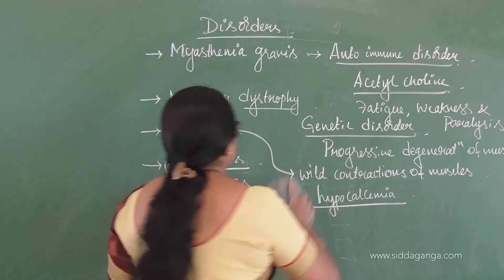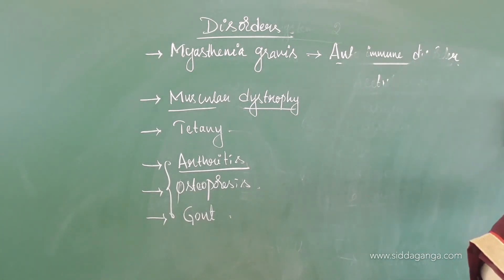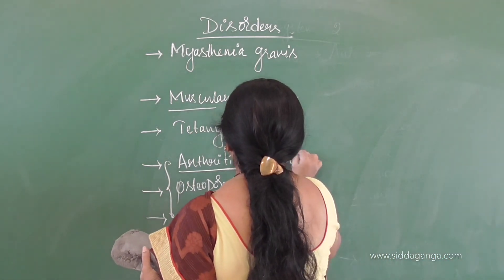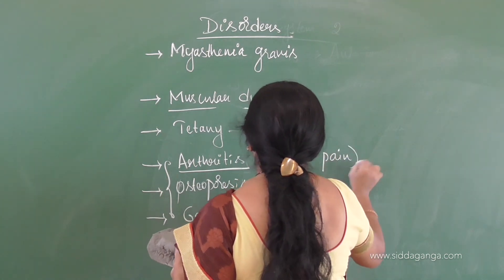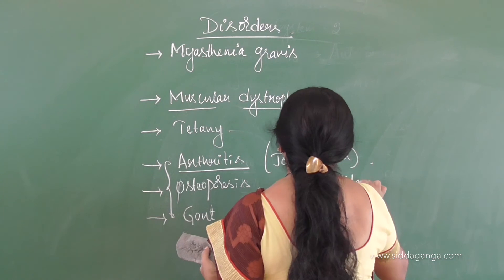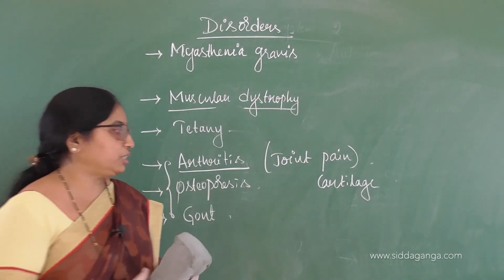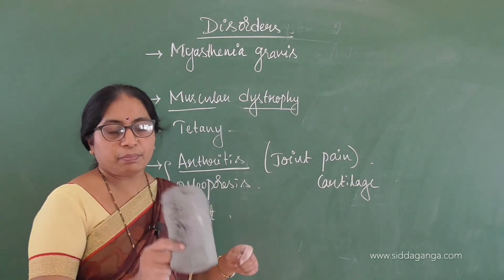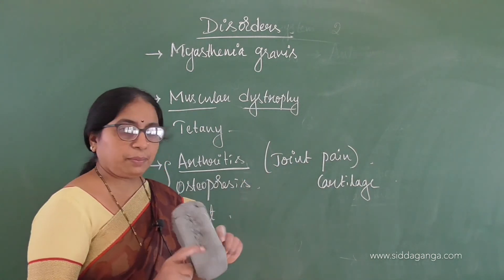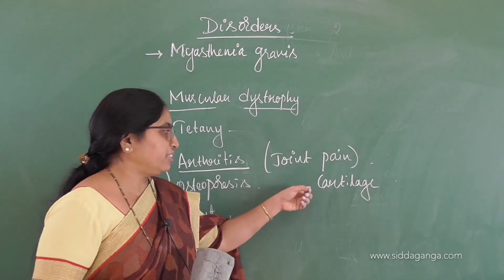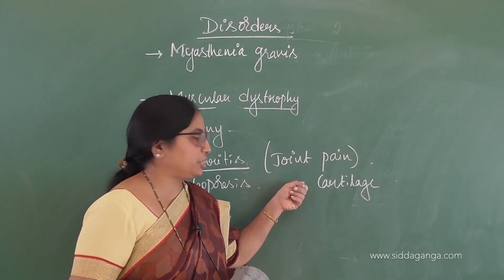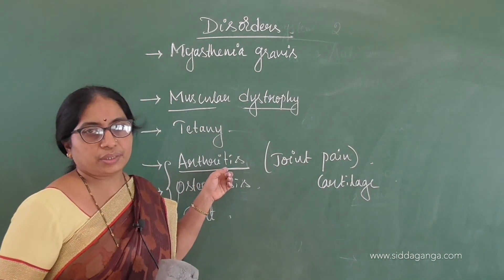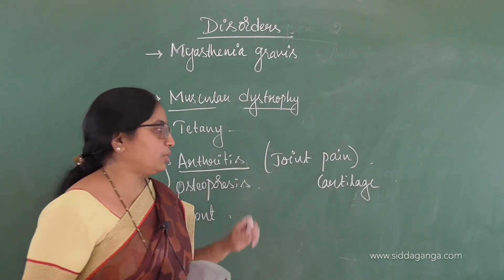Now coming to arthritis, commonly called joint pain. In between the bones at the point of joints there is cartilage, which keeps the two bones slightly apart. When there is degeneration of this cartilage, the two bones touch each other causing severe pain, which is called arthritis or joint pain.